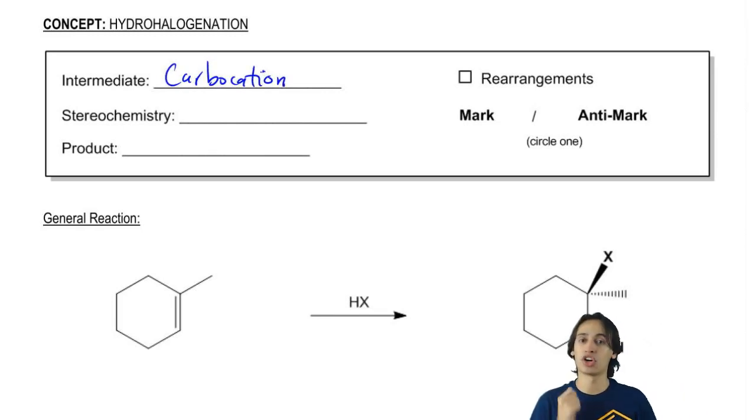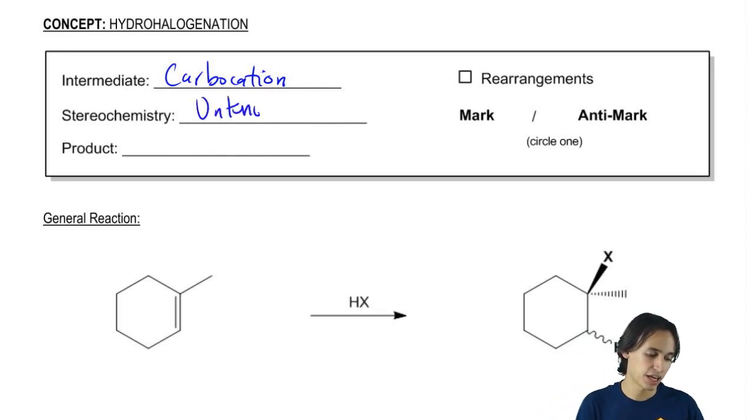So we know that we're going to have a carbocation intermediate and the stereochemistry is going to be unknown. The reason is because whenever you have a carbocation in place and you're attacking it, remember that carbocations are trigonal planar. So what that means is that they have a front side and a back side that are both easy to attack. So what that means is that when something attacks it, I'm not going to know exactly where it's coming from. Is it coming from the front? Back? We don't really know. So you're actually just going to get a mixture.